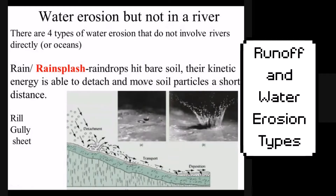There are four types of erosion that happen with water that don't involve rivers or oceans: rain splash, rill, gully, and sheet erosion. The first is rain splash — literally, when raindrops fall down, hit the ground, and splash some soil or sediment further downhill. This only happens in areas with slopes. Without a slope, the splashes would just fall right back down onto the same land. But with slopes, when a raindrop hits the slope, most of that sediment falls further down and will continue falling further with each additional raindrop.